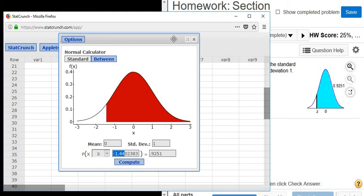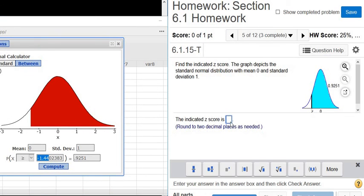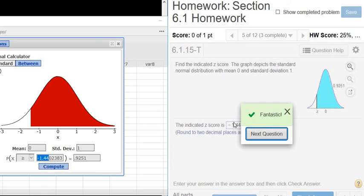There's the answer right there. Negative 1.44. So negative 1.44. Let's type it in. Negative 1.44. That's it.